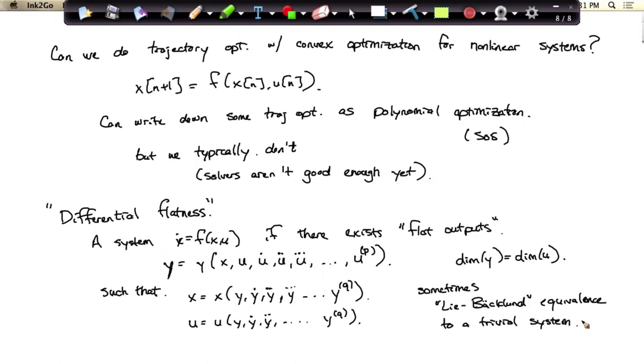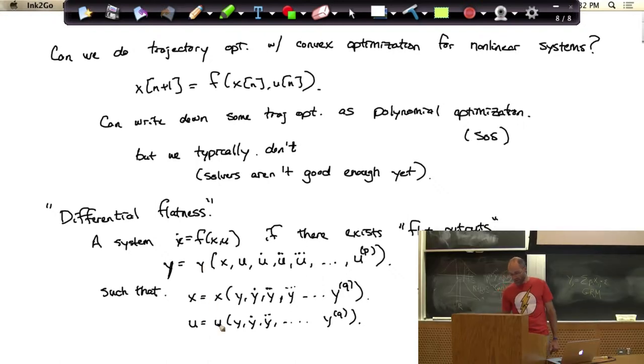So what the heck does that mean? I can have a nonlinear underactuated system, but if I can find some outputs of that system, such that if I prescribe the outputs of the system, there's only one way the system could have achieved those outputs, then I can potentially plan just the outputs of the system and back out what the state and control had to have been.